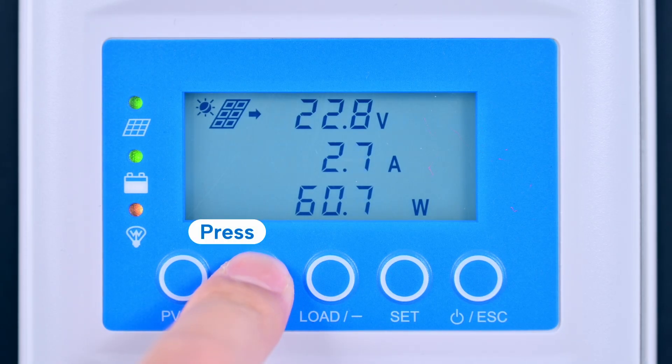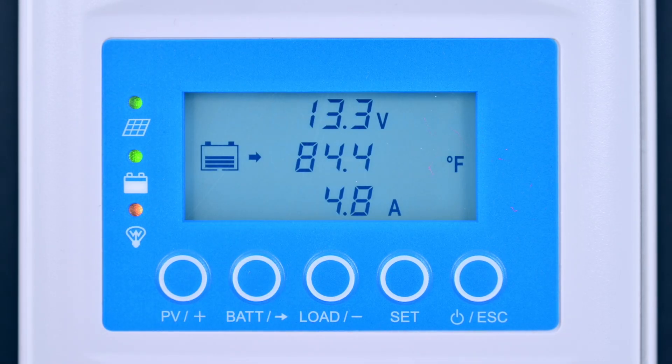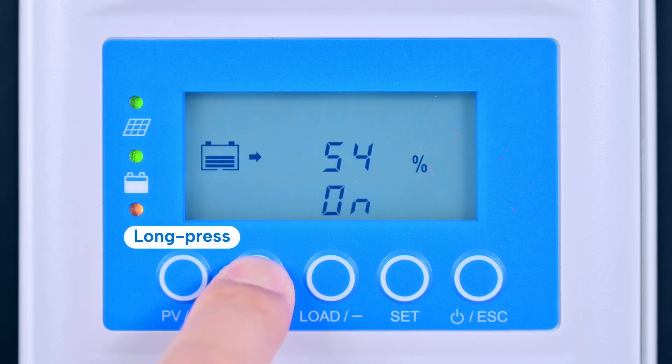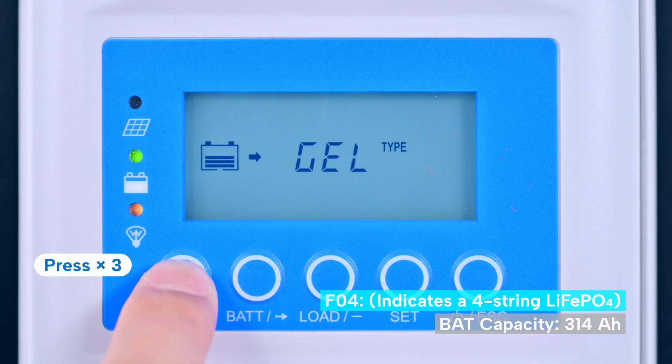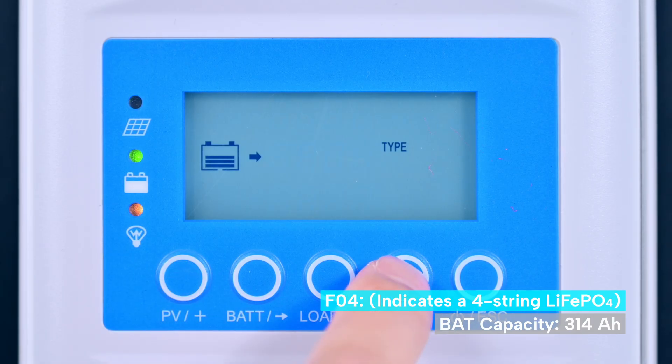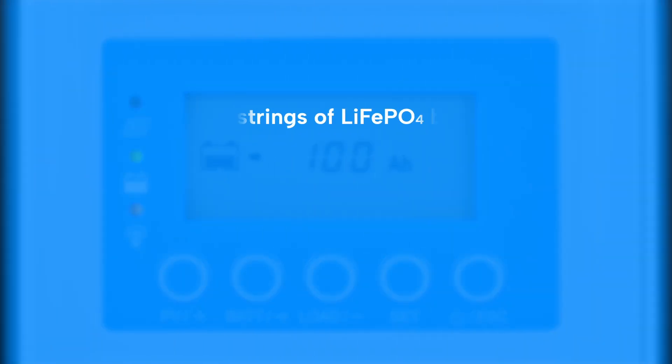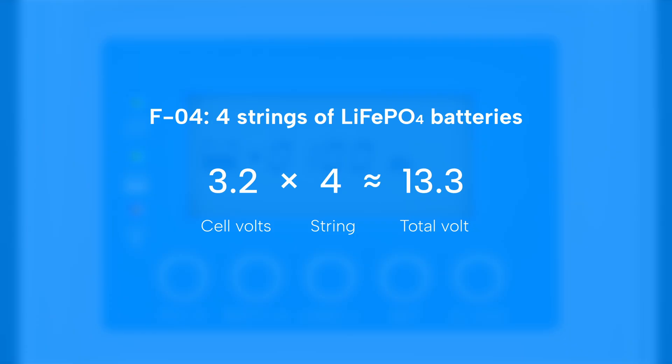First, press BAT to view battery parameters. Then, long press BAT to enter the settings. The default setting is sealed lead acid battery. Change it to a four-string lithium iron phosphate battery. F-04 means four strings of LiFePO4 batteries. Each battery cell delivers about 3.2 volts. Four cells together give approximately 13.3 volts. Make sure your battery type and string number settings match your actual battery configuration.